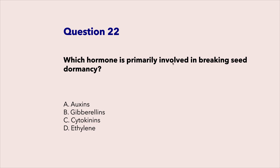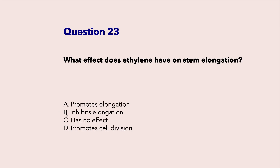Which hormone is primarily involved in breaking seed dormancy? Gibberellins. What effect does ethylene have on stem elongation? Inhibits elongation.